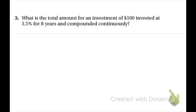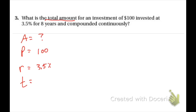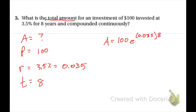Next question — pause the video and try this one on your own. What is the total amount for an investment of one hundred dollars invested at three point five percent for eight years compounded continuously? A is unknown; P is 100; R is 3.5% which is 0.035; T is 8 years. The formula gives A equals 100 times E raised to 0.035 times 8. Entering into the calculator gives approximately $132.31.